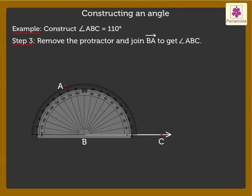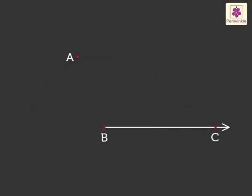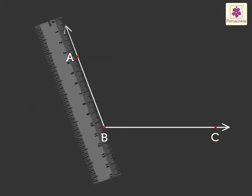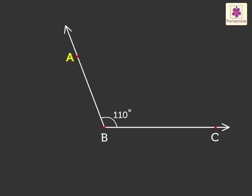Step 3: Remove the protractor and join B, A to get angle ABC.